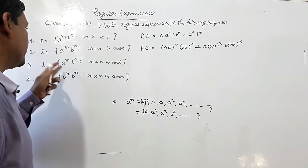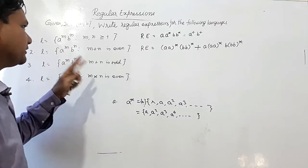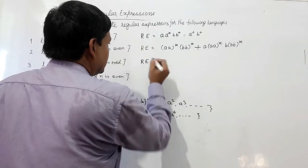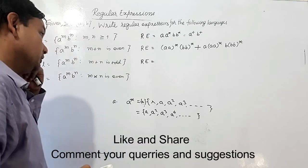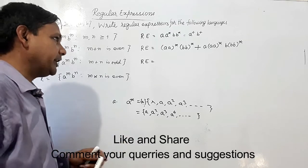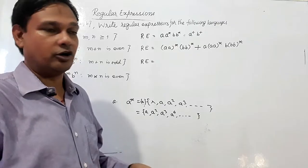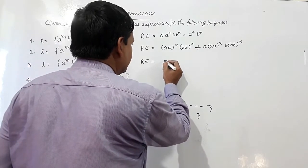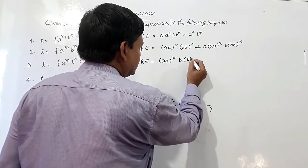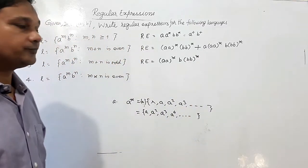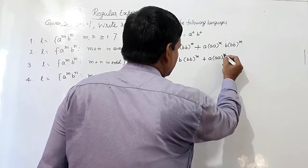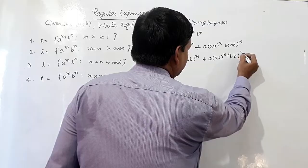For the third language, L equals a^m b^n such that m plus n is odd. If m plus n is odd, there are two possibilities: either a's are odd and b's are even, or a's are even and b's are odd. So if A is even, b should be odd; and if A is odd, b should be even.